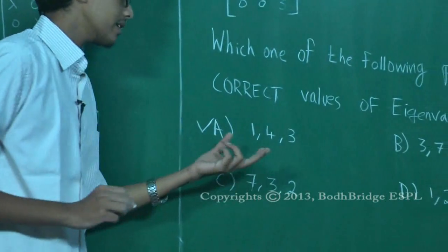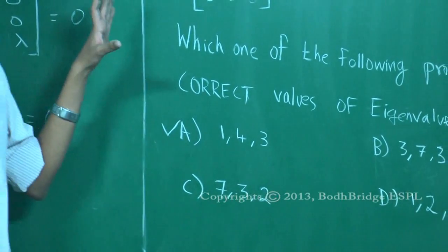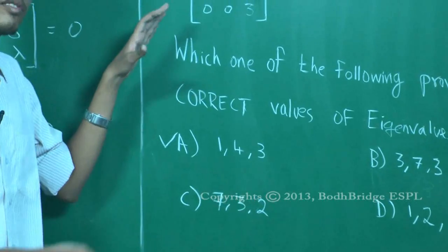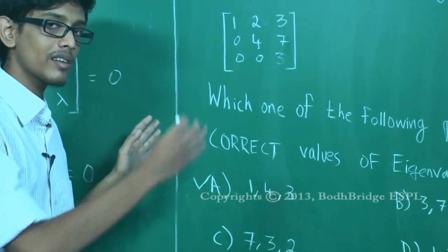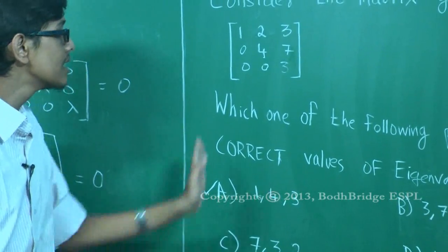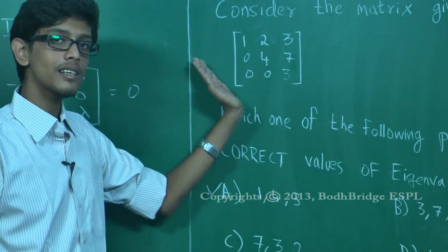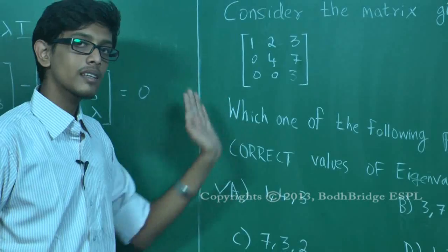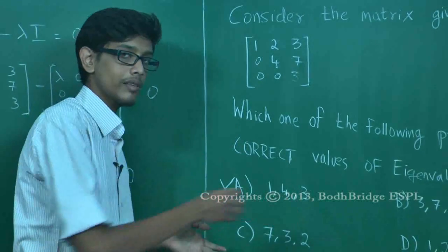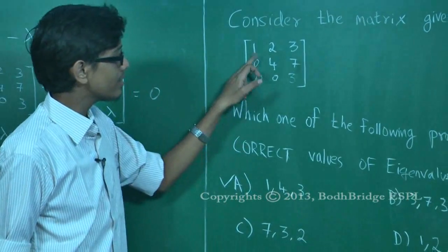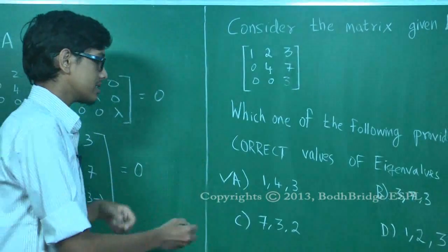One important observation: if the given matrix is an upper triangular matrix — that is, all elements below the main diagonal are zero — then the eigenvalues are simply the main diagonal elements. Here those are one, four, and three, confirming option A is the correct answer.